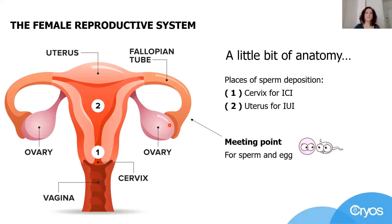The meeting point for sperm and egg is the fallopian tube. When artificial insemination is performed, for ICI — intracervical insemination — the sperm is deposited in the cervix, marked with number one in the picture. For intrauterine insemination, the sperm is directly deposited in the uterine cavity, marked with number two in the picture.